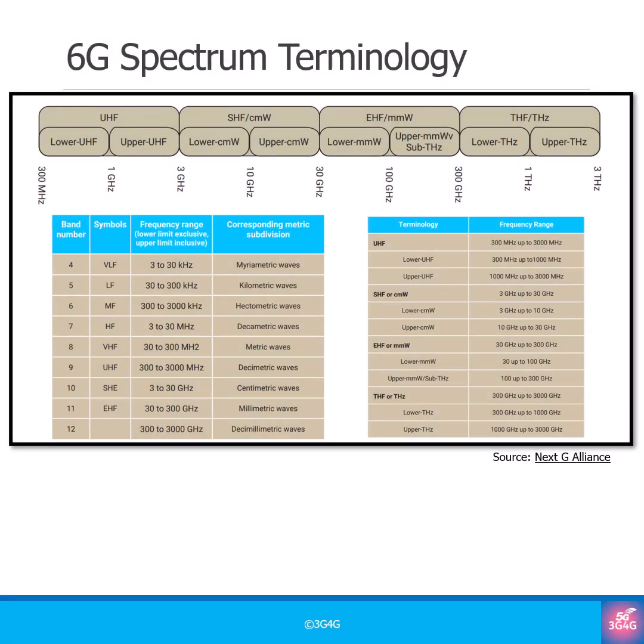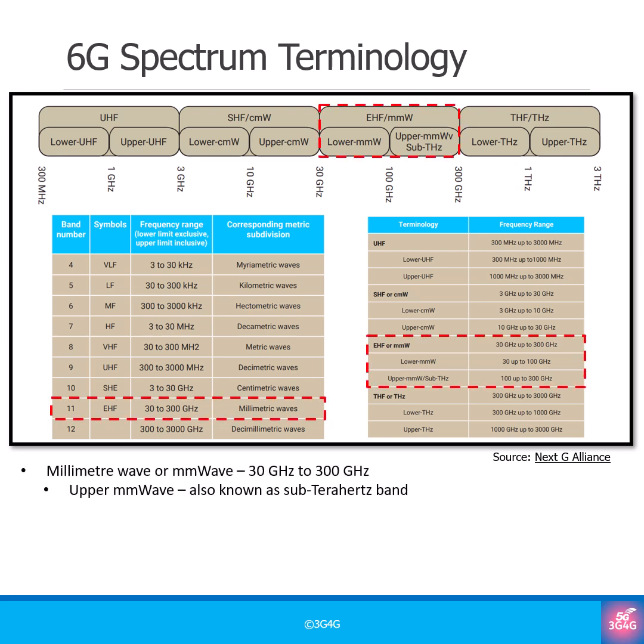A short video to explain some terminology that's mainly being used for 6G but occasionally for 5G as well. Let's start with millimeter wave, or MM wave. MM wave covers frequencies from 30 GHz to 300 GHz. The table on the right splits this into lower and upper MM wave, and highlights that the upper MM wave band is sometimes referred to as sub-Terahertz.